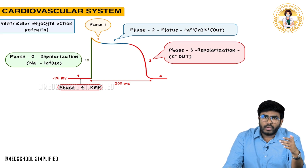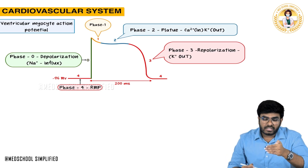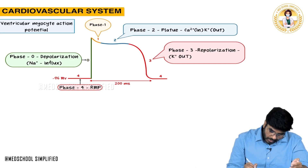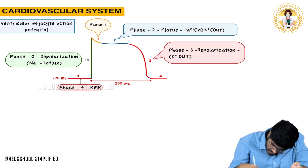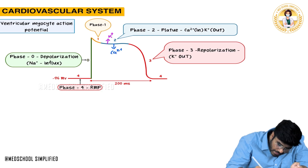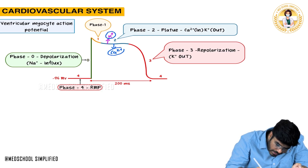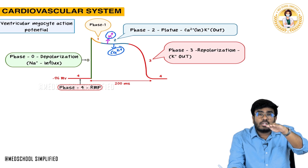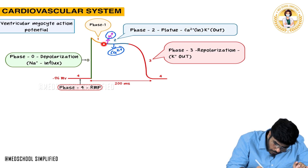But something happens now. Potassium is going out, and at the same time calcium starts to enter into the cell. Positivity is going out as well as positivity is coming in. This is phase two — the plateau phase. Since both potassium and calcium are positively charged ions, the membrane potential stays flat and does not fall.